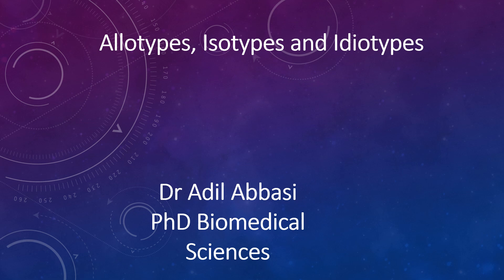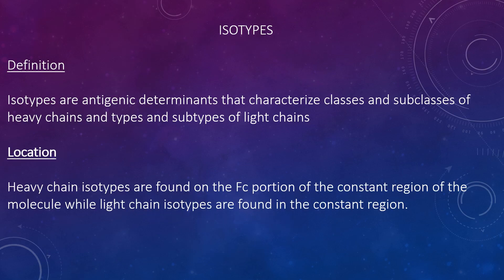Structure and function of immunoglobulins and antibodies, part 2. Difference between isotypes: isotypes are antigenic determinants that characterise classes and subclasses of heavy chains and types of light chains.